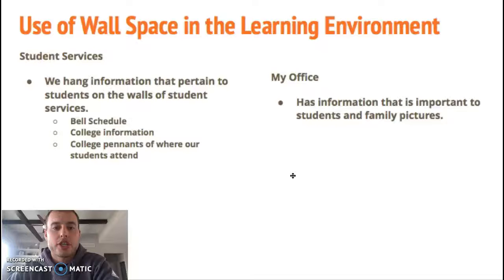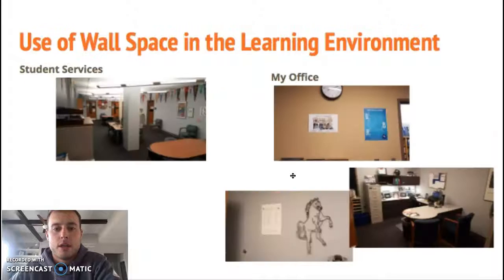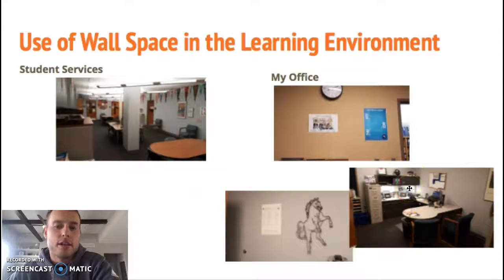Regarding wall space: we hang information in student services pertaining to students — bell schedule, college information, college pennants of where our students have gone, and a map showing where students are going. My office has similar information but it's more personal to me — family pictures and things that describe who I am, giving students a sense of my personality. You can see pennants, artwork, and student-relevant information. In my office I have a picture of the girls basketball team because I coach, the bell schedule, pictures of my family, a football helmet, a K-State pennant, a Mustang logo, and study hall schedules — a wide variety of topics to help our students.